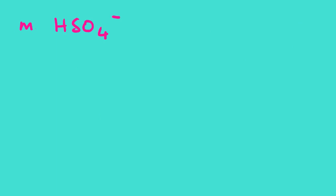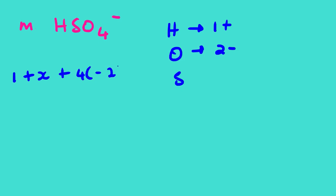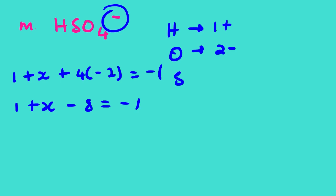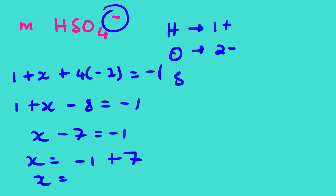Example 13: HSO₄⁻. The overall charge is −1. Hydrogen is 1+; oxygen is 2−. Solving for sulfur (x): 1 + x + 4(−2) = −1 → 1 + x − 8 = −1 → x − 7 = −1 → x = 6+. The oxidation number of sulfur in HSO₄⁻ is 6+.